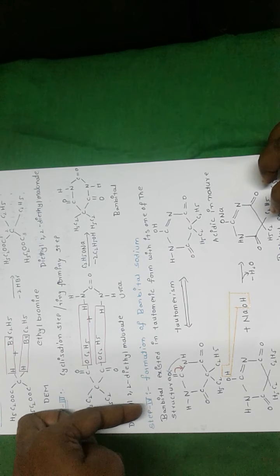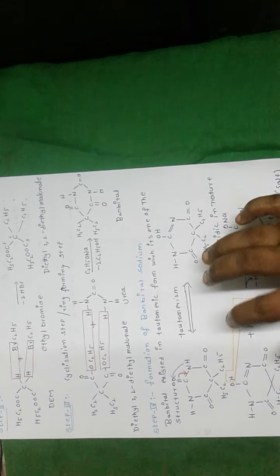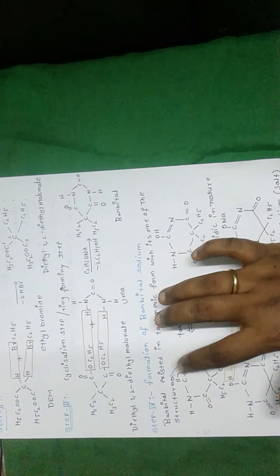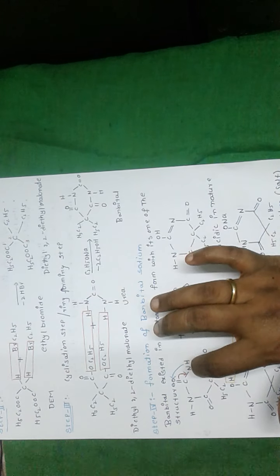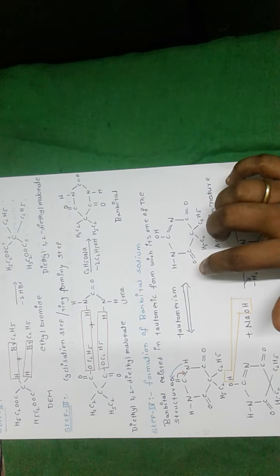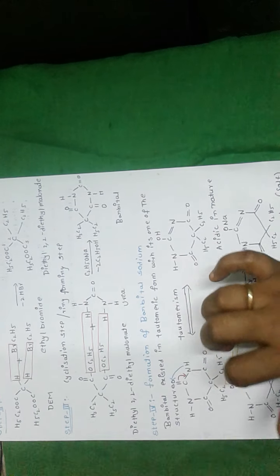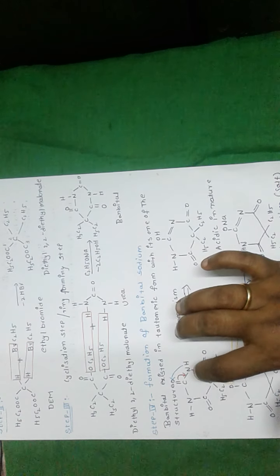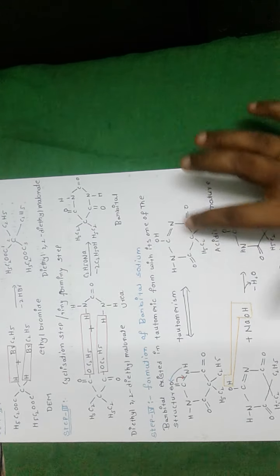Coming to step number four: in this step, barbital sodium is formed. Barbital exists in tautomeric form. The definition of tautomerism is the interconversion of a proton and electrons within the same molecule. Here, a proton migrates to oxygen and a bond is formed, so the electrons are shifted between carbon and nitrogen to form a double bond.